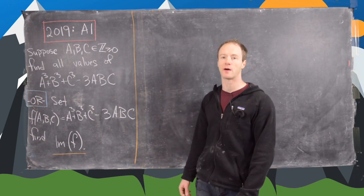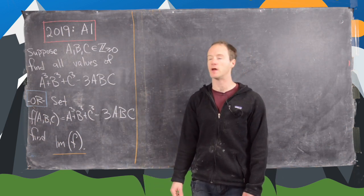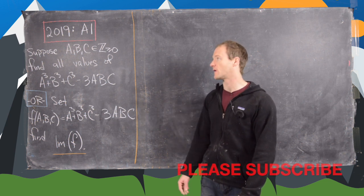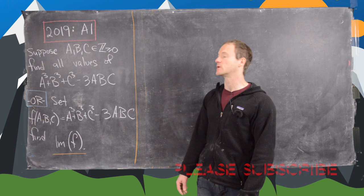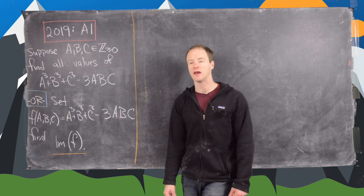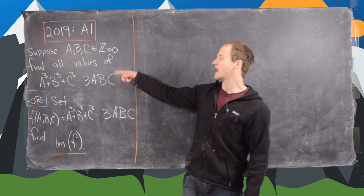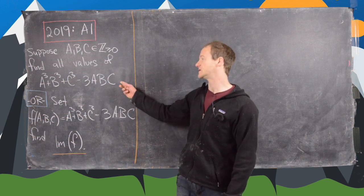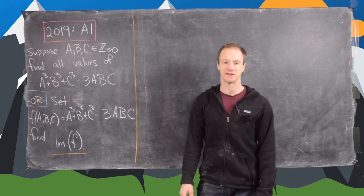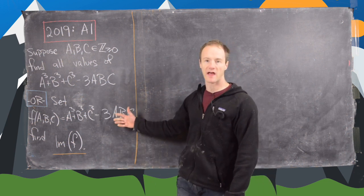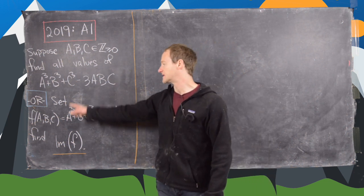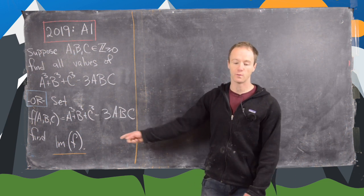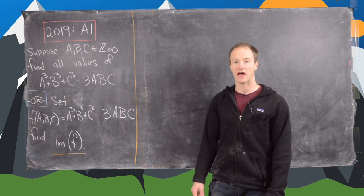In this video we're going to look at a solution to problem number A1 from the 2019 Putnam. The problem reads as follows. We suppose that a, b, and c are non-negative integers and we want to find all values of this expression. We have a cubed plus b cubed plus c cubed minus 3abc, and we can set f of a, b, c equal to that expression — then we really want to find the image of f.